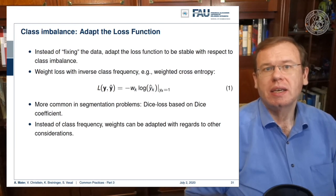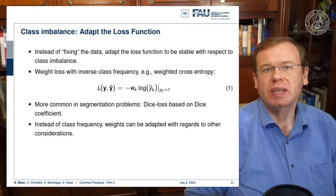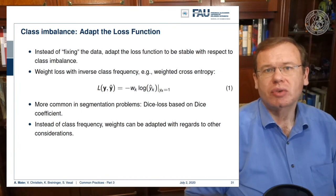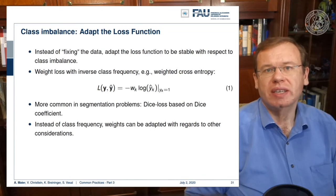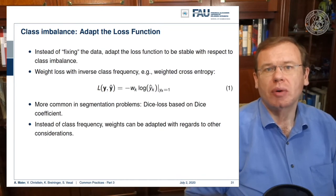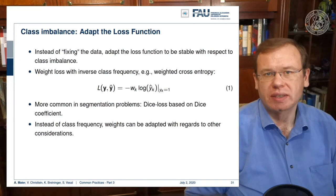Here you choose a loss with the inverse class frequency. You can create a weighted cross entropy where you introduce an additional weight w, which is simply determined as the inverse class frequency.